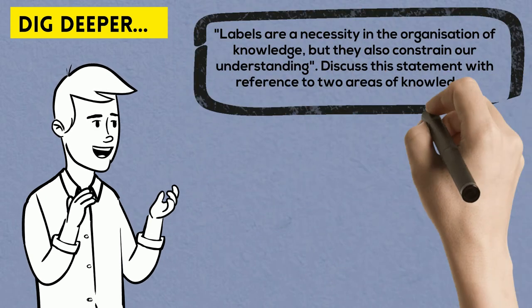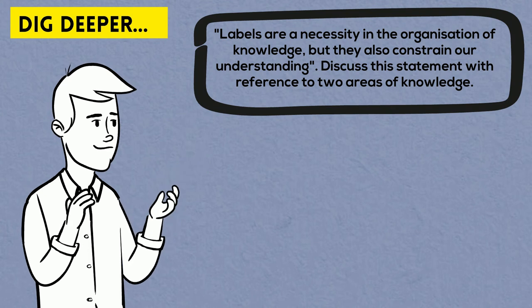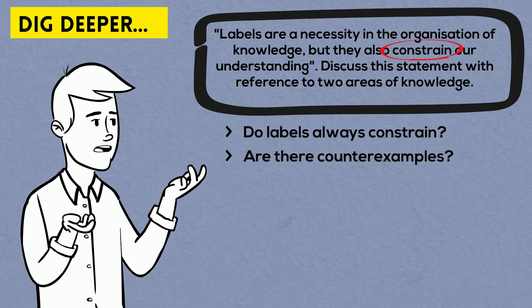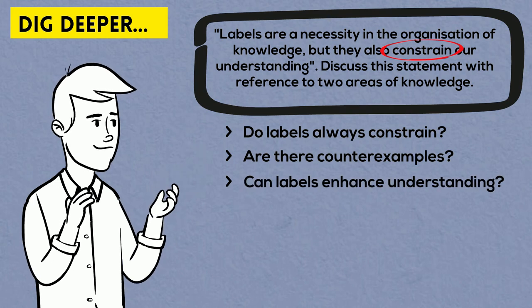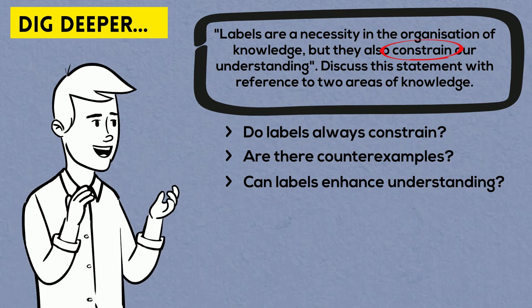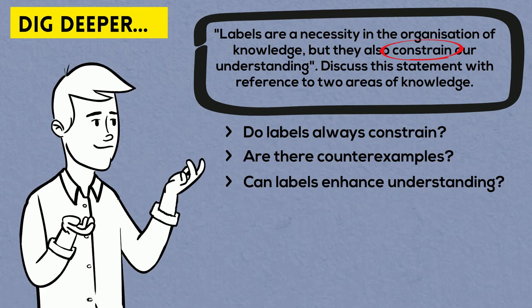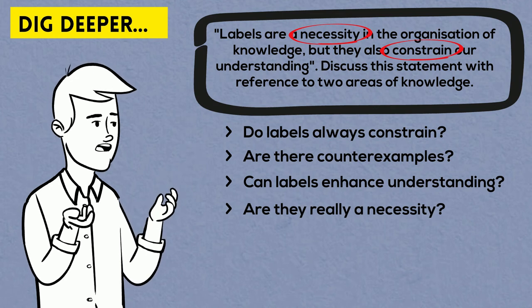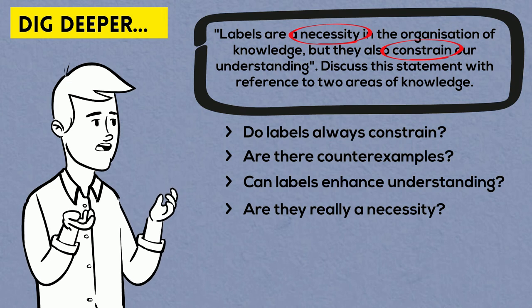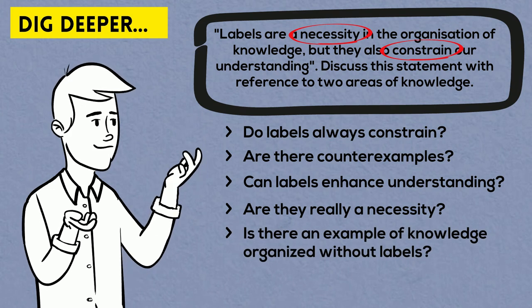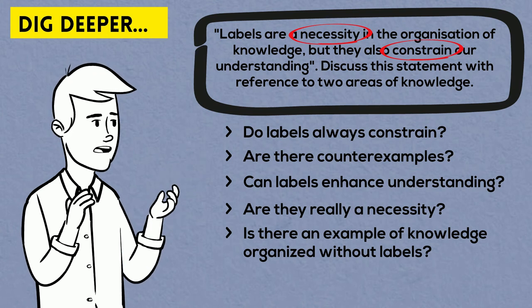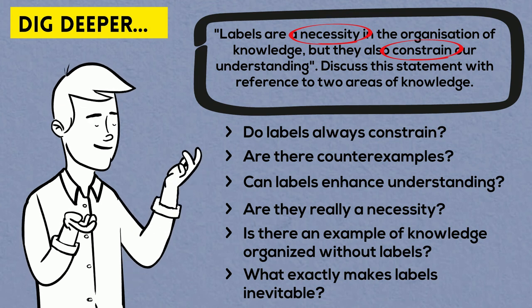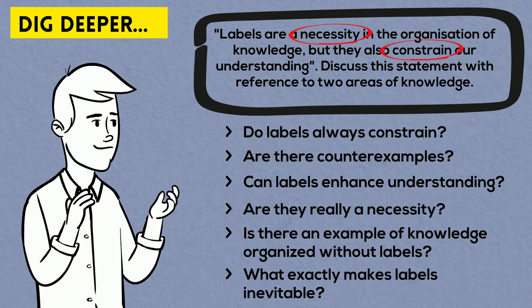For the labels example, you can try asking yourself additional questions that kind of doubt the title or shake it up a little. So we agree that labels constrain our understanding, but do they always? Are there examples when labels do not really constrain our understanding? Are there examples when labels actually help us enhance our understanding or discover new knowledge? Further, it seems obvious that labels are helpful in the organization of knowledge, but are they a necessity in the organization of knowledge? Because the title says necessity and it's not the same as simply being useful. Can you think of an example where knowledge can be organized without labels? Because if you can, then the statement in the essay title is wrong. If you can't think of such an example, then you can agree with this part of the title, but then what exactly makes labels inevitable? Is it good or bad? Is there any different way to organize knowledge? And is it different in different areas of knowledge?